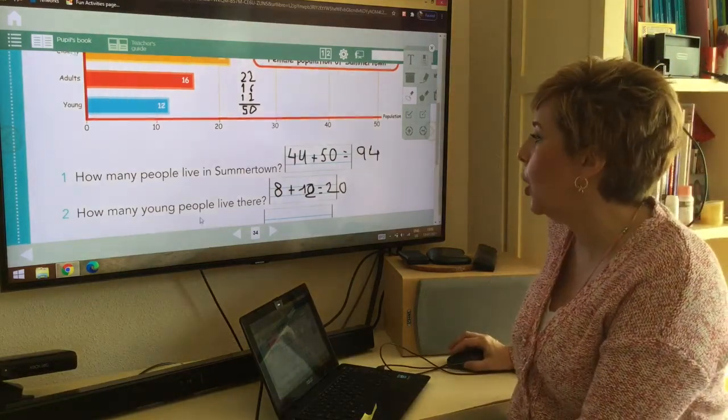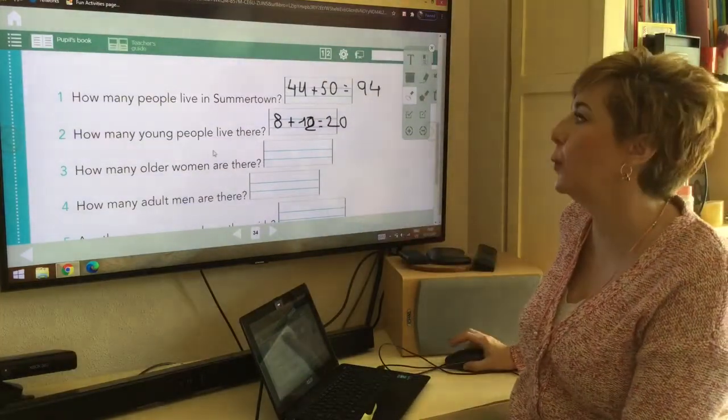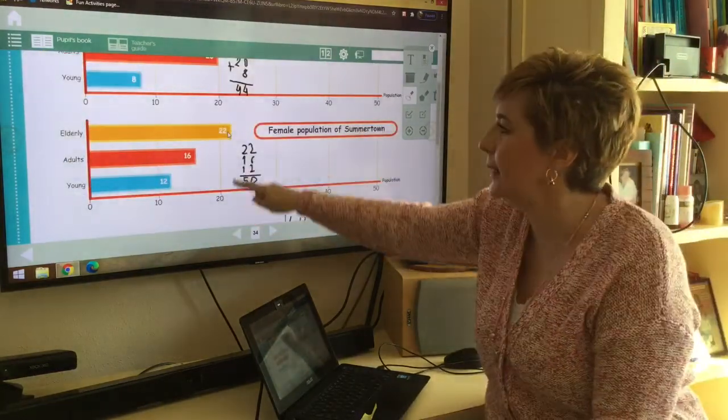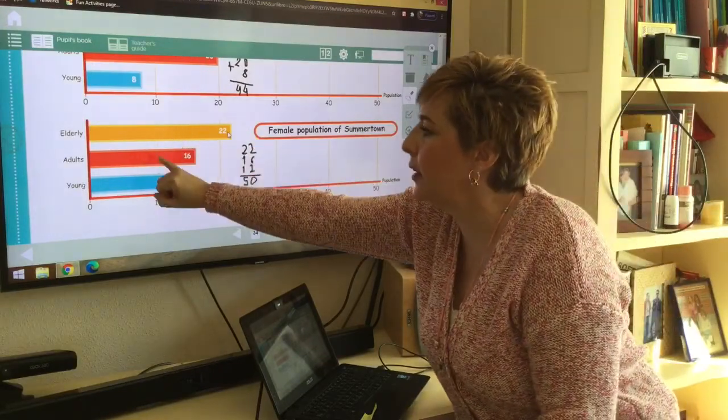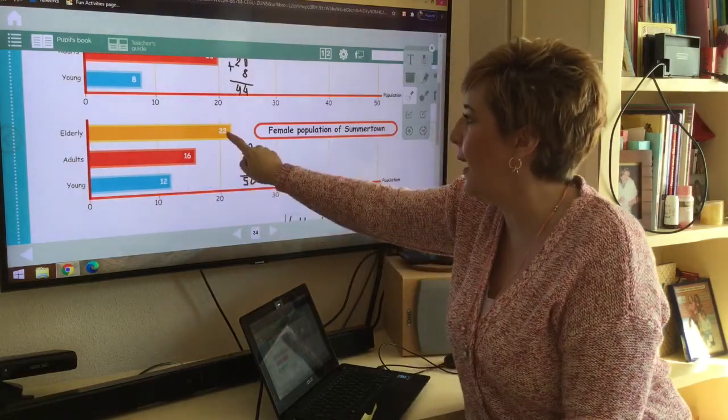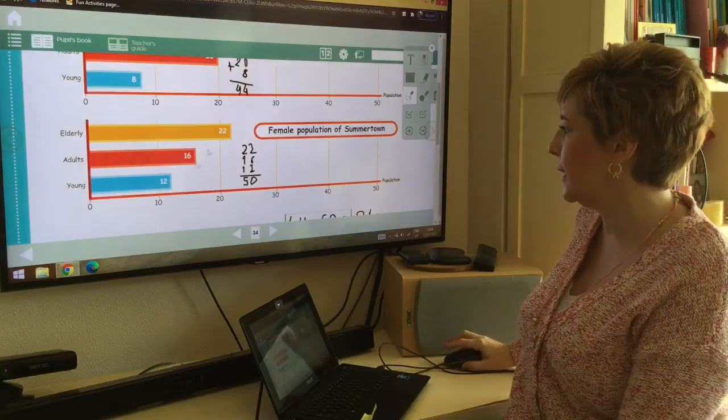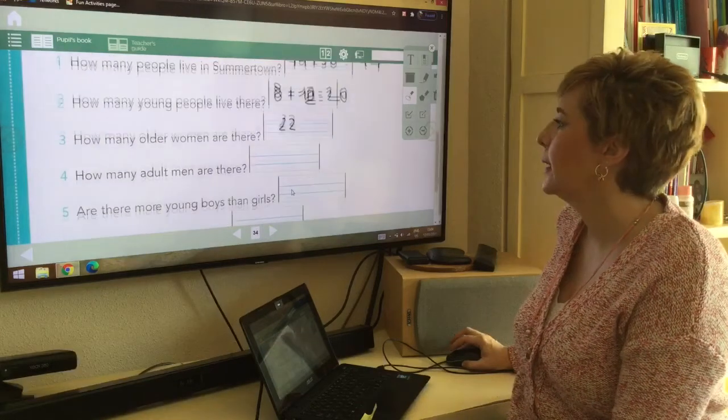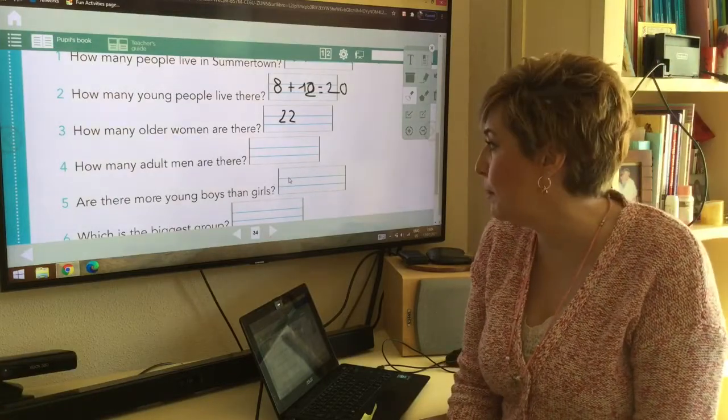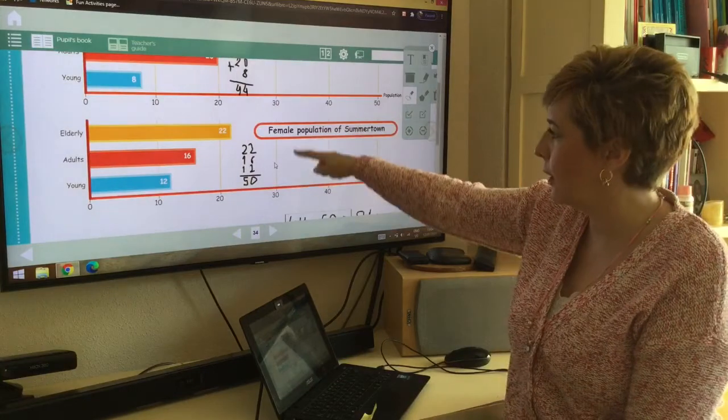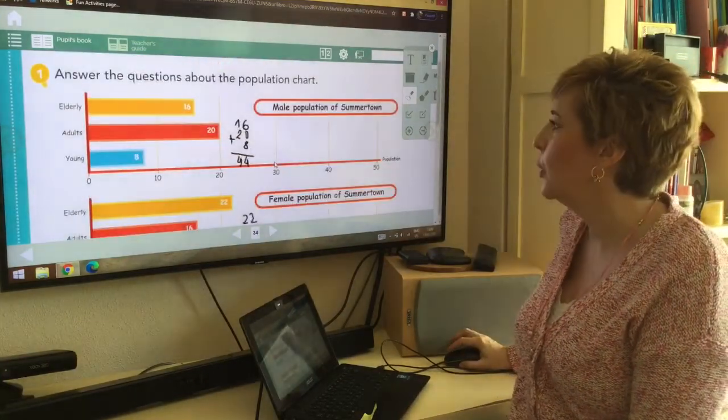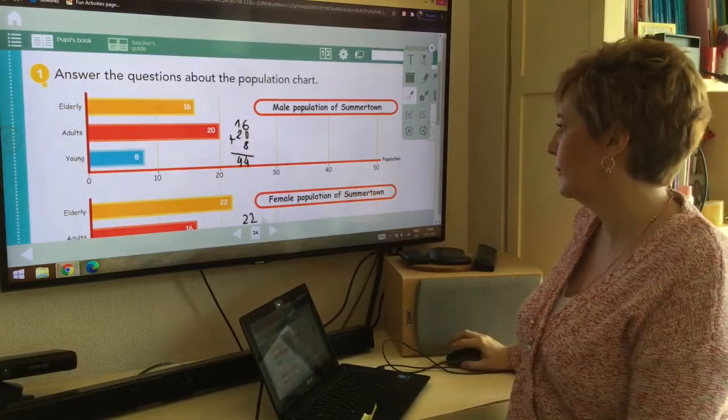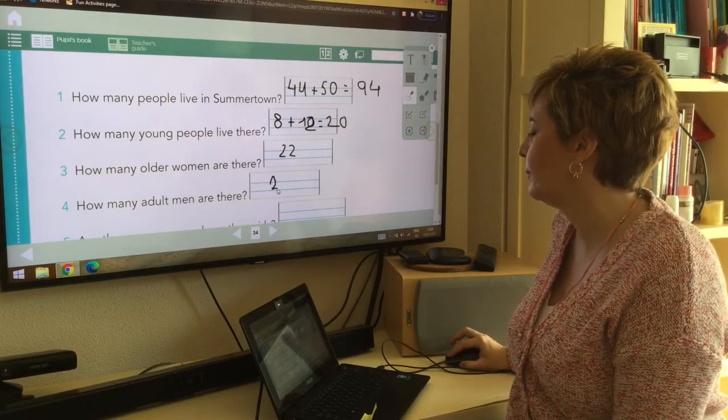Let's go to the next question. How many older women? Do we have to look at male? No. Do we have to look at female? Yes. Elderly. And we have twenty-two elderly female. And now, how many adult men are there? We go to male and we go to adults. And we have twenty.